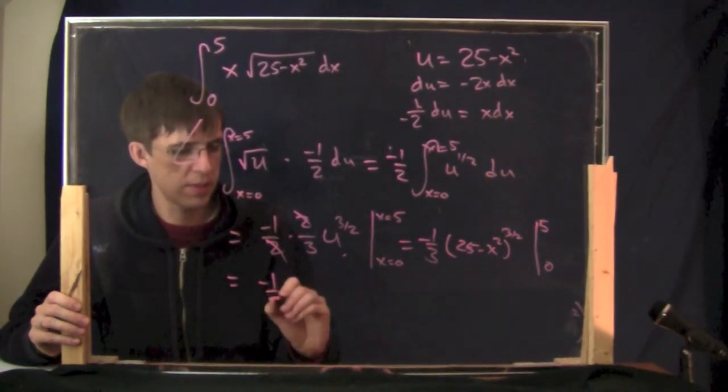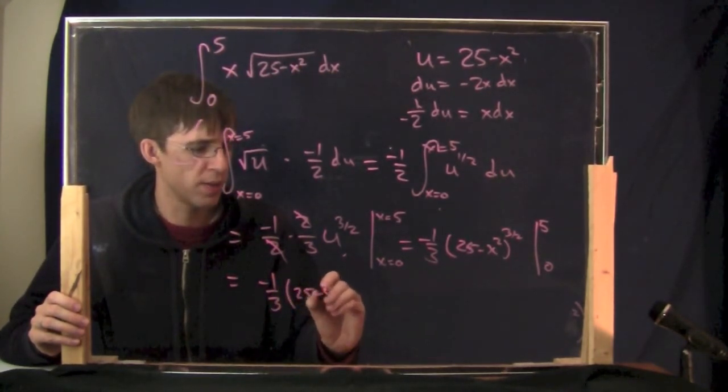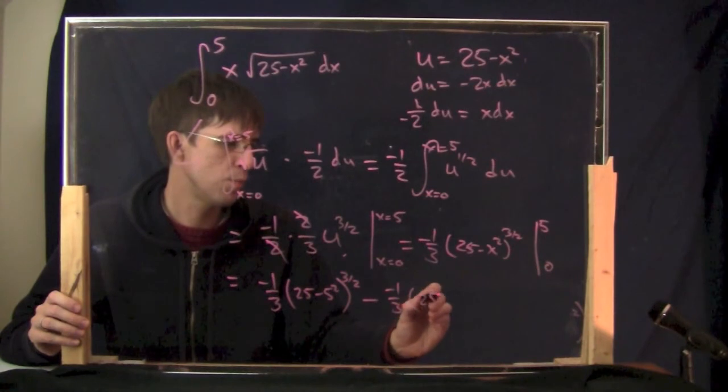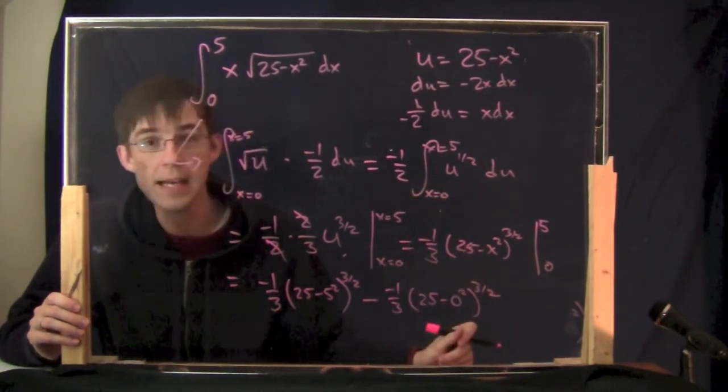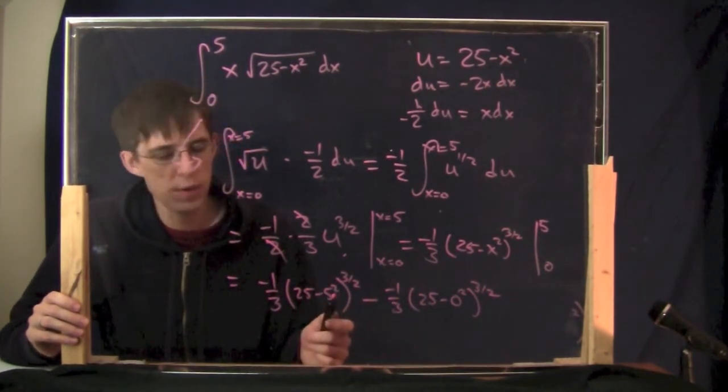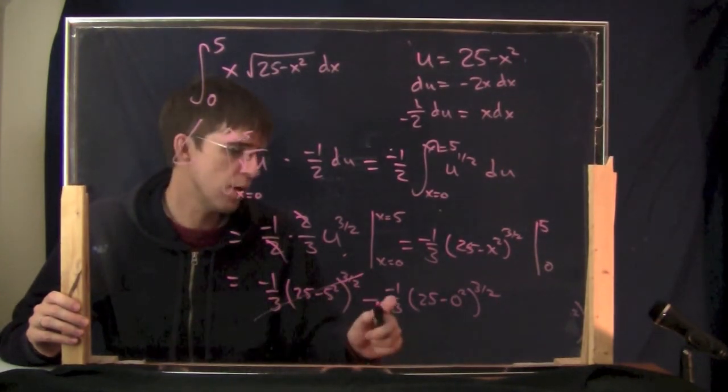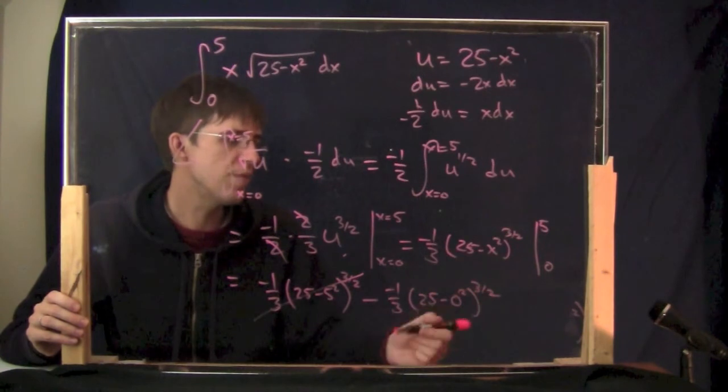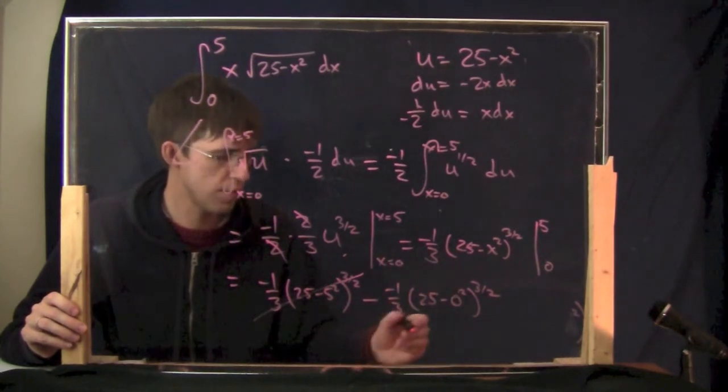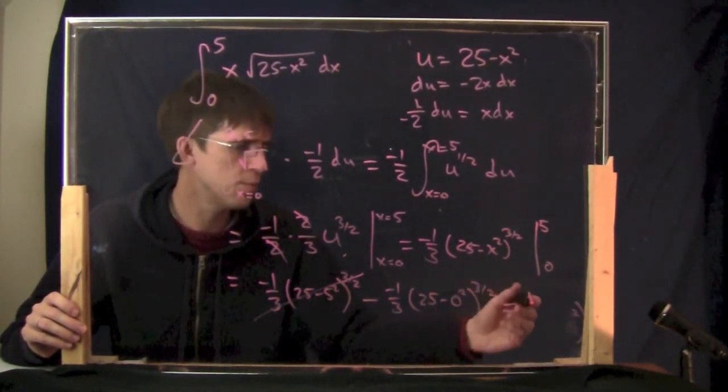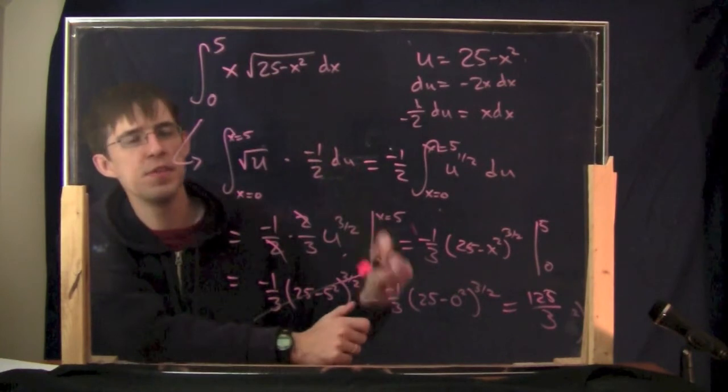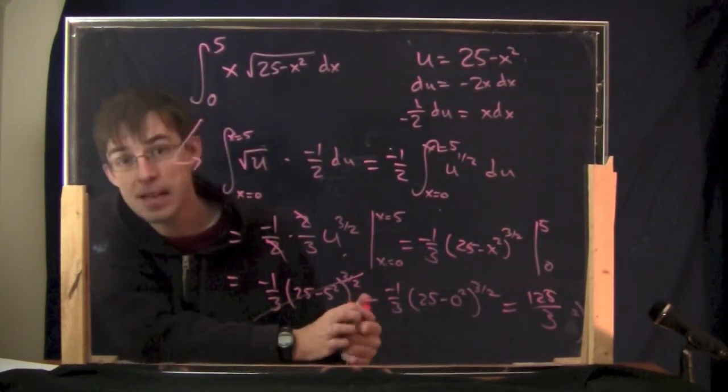Let's do it. This is my final answer now. Negative 1 third, 25 minus 5 squared to the 3 halves, minus negative 1 third, 25 minus 0 squared to the 3 halves. That's the answer. This actually can simplify if you want to. 25 minus 5 squared, 5 squared is 25, so that whole thing is 0. Over here, we have minus and a minus, that can be a plus. 1 third, 25 to the 3 halves power, that's the same as the square root of 25 cubed, so that would be 5 cubed, which is 125. I think that's the final answer there, just in case you care. That is the area under the curve of this thing, from 0 to 5. That's how we do it.